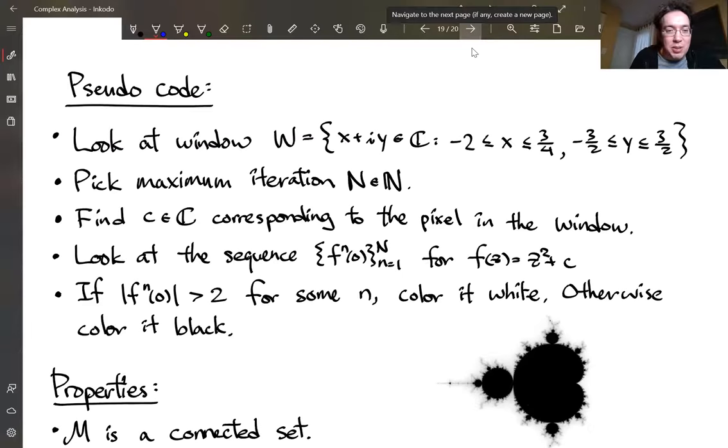And that's, this is the pseudocode right here. So look at a window. And if you're drawing the Mandelbrot set, a reasonable window to pick if you want the whole Mandelbrot set for real values between negative two and positive three quarters. And for imaginary values from negative three over two to positive three over two. So you can kind of see that it has a mirror reflection across the real axis. So the top half looks the same as the bottom half.